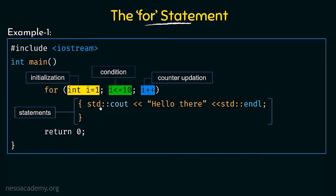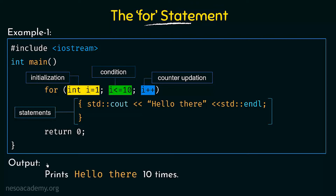After the statements are executed, the counter will be updated, then the condition will be checked. If it is true, statements are executed again, then the counter is updated, and so on. That is the flow of control in a for statement. The output of this program is it prints 'hello there' 10 times.